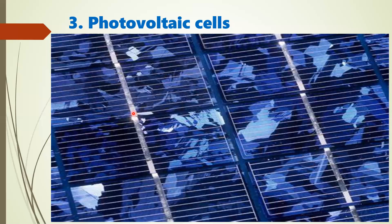These nanorods behave as wires when they strongly absorb light of a specific wavelength, generating electrons. These electrons flow through the nanorods until they reach the aluminum electrode, where they are combined to form a current and used as electricity. The use of such nano photovoltaic cells will definitely reduce the dependence of human society on traditional fossil fuels for power generation in the future.